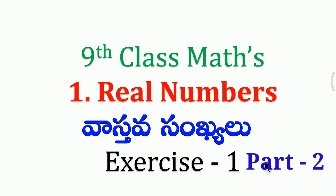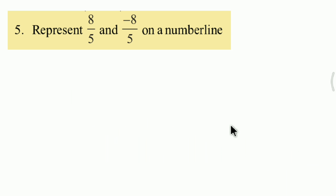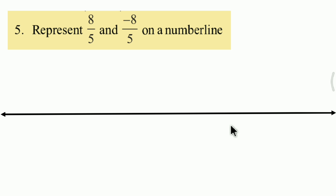Hello everybody, welcome to Nivas Info. Today's topic is 9th class maths, first chapter Real Numbers, Law Exercise 1. We will represent 8 upon 5 and negative 8 upon 5 on a number line. First of all, we draw 0, then next mark 1 and negative 1 on the number line.